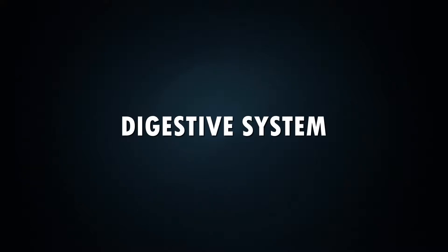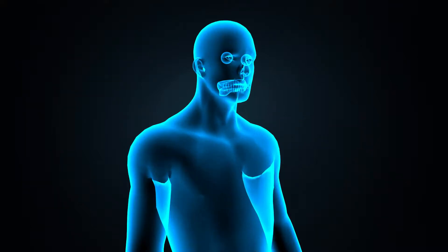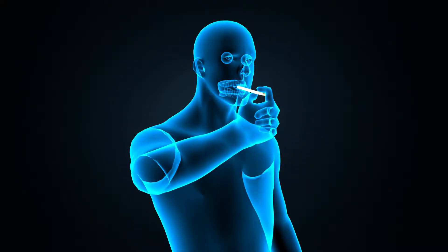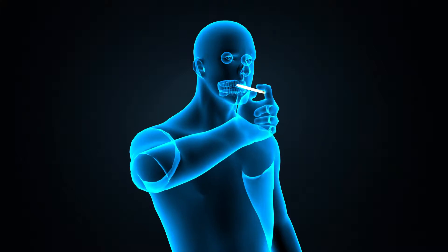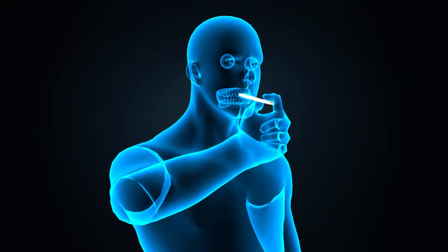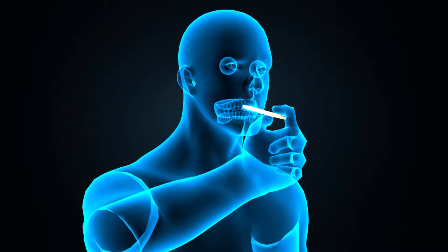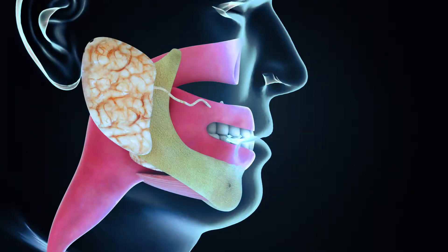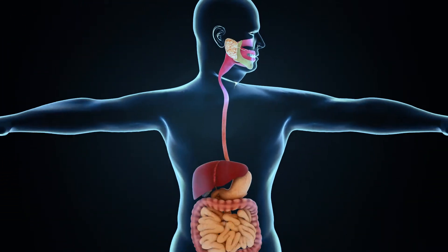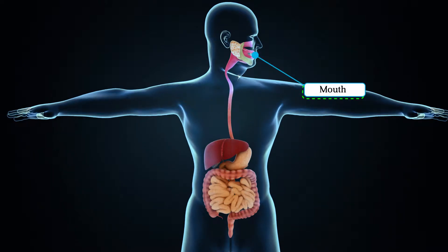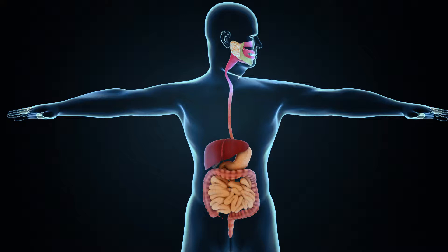Digestive System. Digestion is a process in which complex food material is broken down into simpler substances. The digestion of food in humans takes place in the alimentary canal, which is a long tube extending from the mouth to the anus.